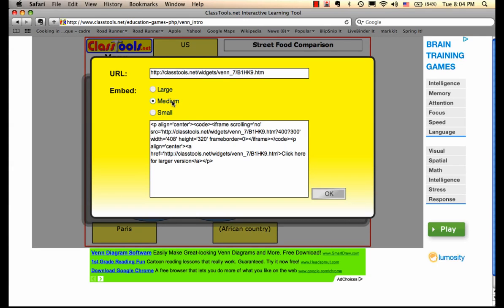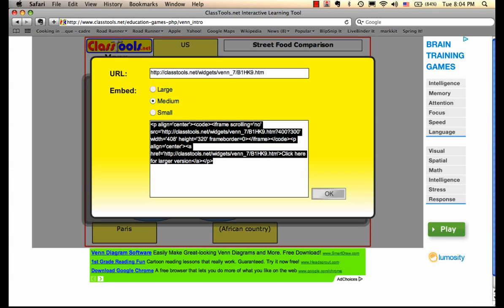Medium is fine for your size—that's the default, so you don't need to change anything. You're going to select the code in the large box, the embed code, and copy it to your clipboard. Then click OK.